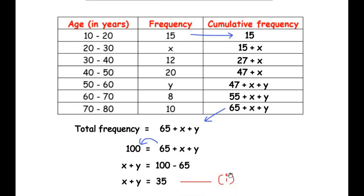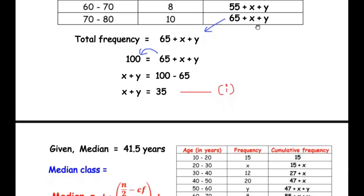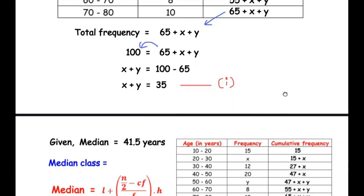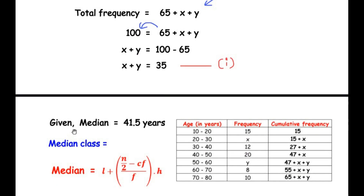Let us consider x plus y equals 35 as Equation 1. Now let us move to the next step. The median age was mentioned as 41.5 years, so let us find the median class. Since 41.5 lies within the class width 40 to 50, the median class is 40 to 50.